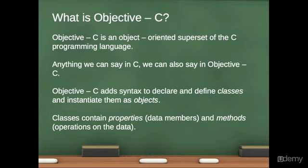If you don't know Objective-C, that's fine. We don't assume that you know anything at all about Objective-C. Objective-C is an object-oriented superset of the C programming language. C has existed for over 40 years, and Objective-C was written as an object-oriented extension to C in the mid-80s. Anything we can say in C we can also say in Objective-C, so Objective-C has all of the primitive types that C has, including structs, unions, arrays, and all that kind of stuff.